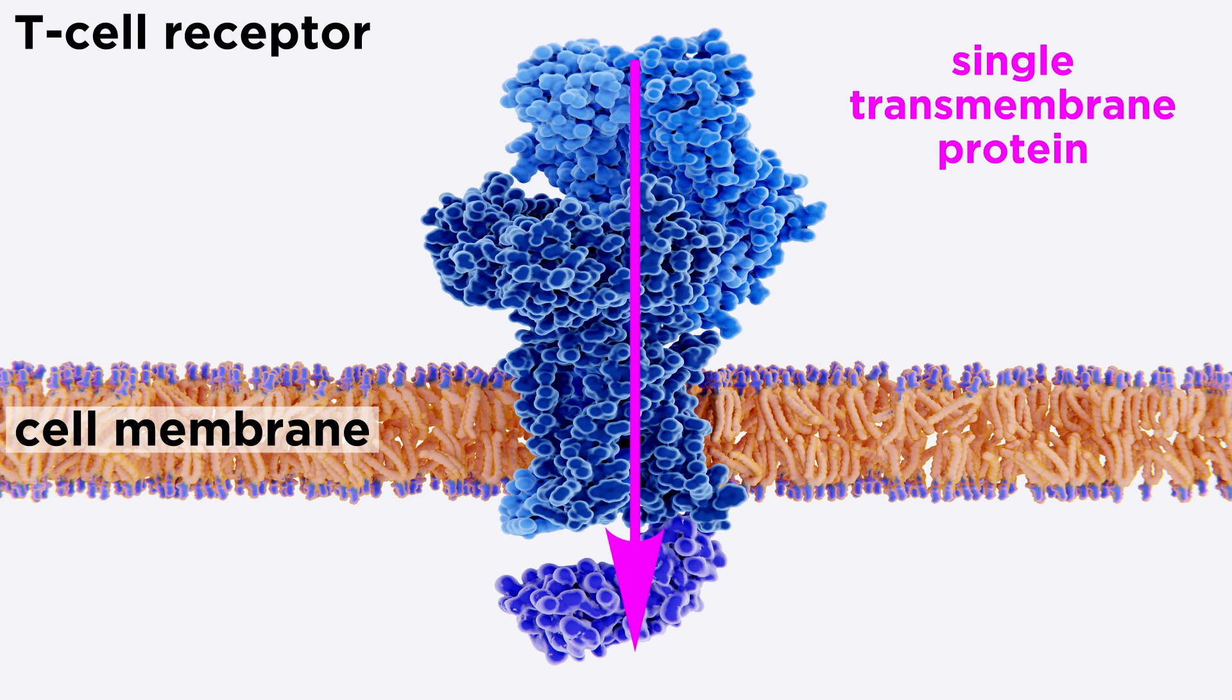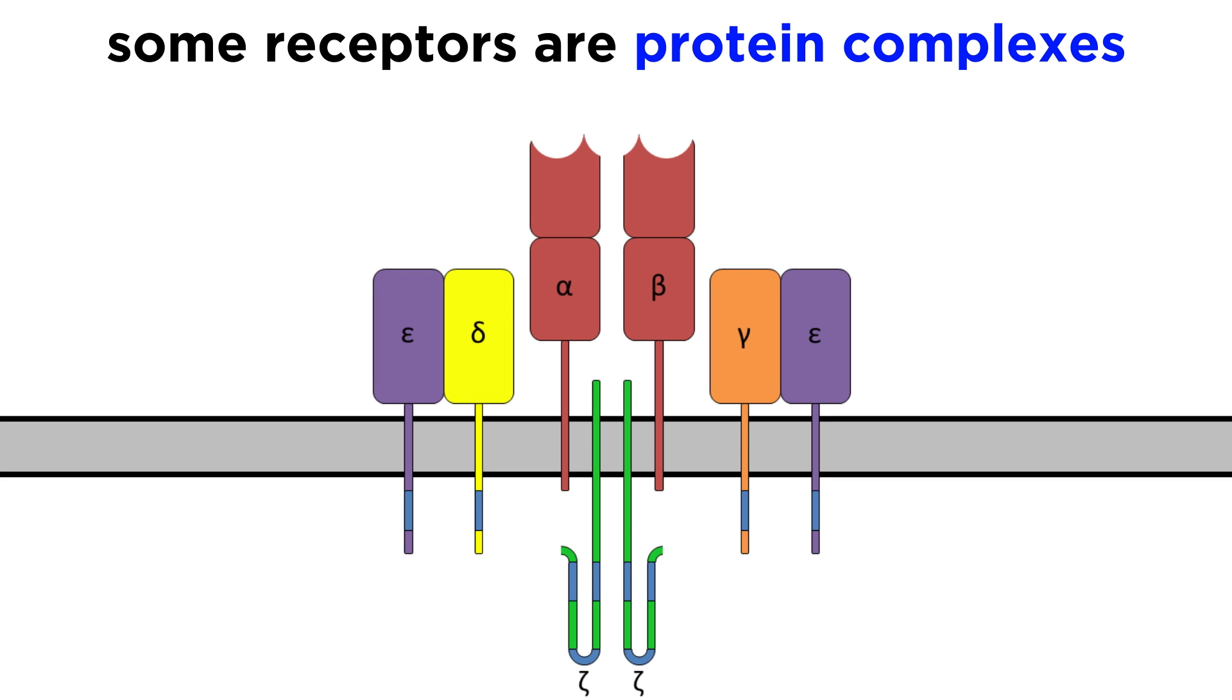Most receptors are single transmembrane proteins, whose domains span the intra- and extracellular spaces. However, some receptors are protein complexes, with separate proteins teaming up to play the roles of extracellular sensing and intracellular signaling.